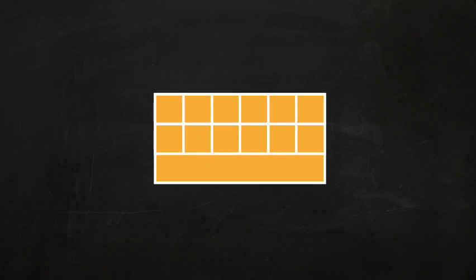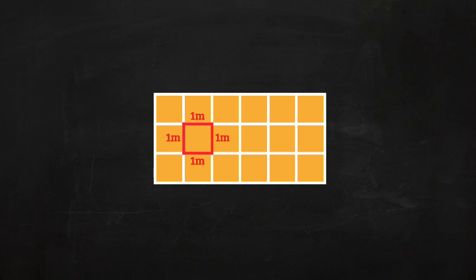See this rectangle. It can be divided into 18 squares. Each square has 4 sides that are 1 meter long. Another way of saying it is 1 square meter, or 1 meter squared. It is written like this.